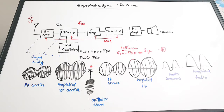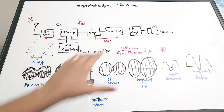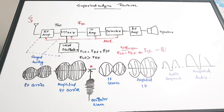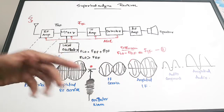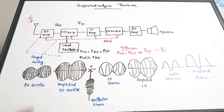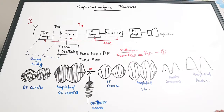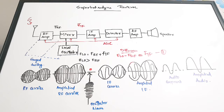Another important feature is AGC — automatic gain control. This is applied to all important components of the super heterodyne receiver to maintain a sustainable gain within the circuit. Selectivity and automatic gain control are two very important advantages of the super heterodyne receiver.